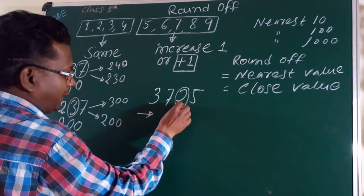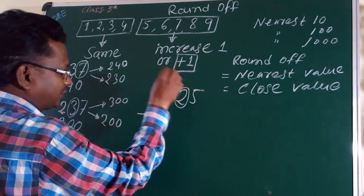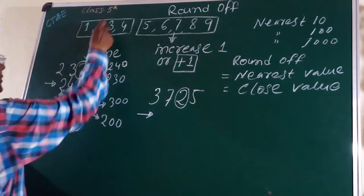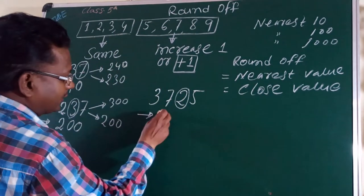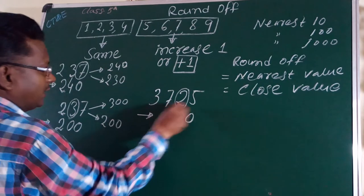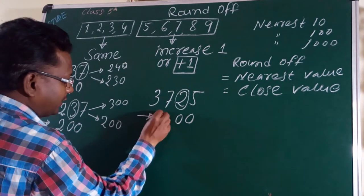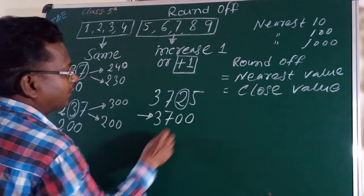तो 10 डीजिट तो यह तो कुंच आ ग्रुम, तो 7 बढ़ेगा नहीं तो यह 00 जाएगा। 100 प्लेस में राउंड आप करेंगे तो 37 बढ़ाएगा।